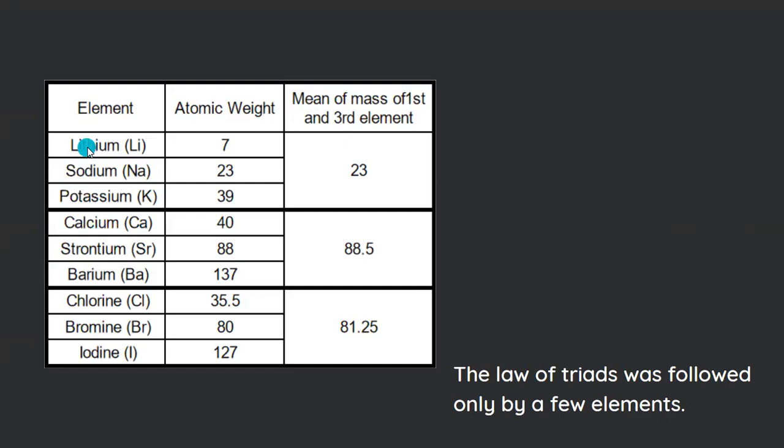He grouped elements as groups of three, and according to him the atomic weight of the first and the third divided by two was equal to the atomic weight of the second element. So lithium plus potassium by two equals the atomic weight of sodium. Similarly calcium and barium for strontium, and chlorine and iodine for bromine. He called this group of three a triad.